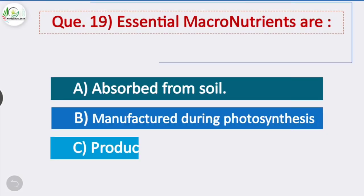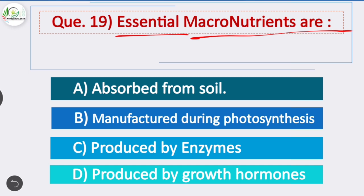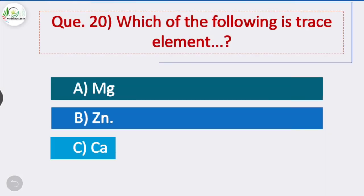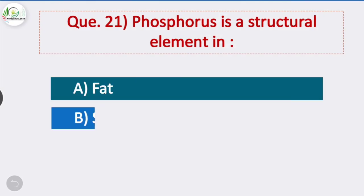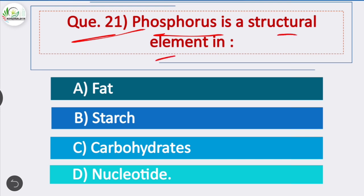Question 19: Essential micronutrients are absorbed from soil — option A is correct. Question 20: Which of the following is a trace element (micronutrient)? Zinc is a trace element — option B is correct. The other three — magnesium, calcium, and phosphorus — are macronutrients. Question 21: Phosphorus is a structural element in — option D is correct — nucleotides are made up of phosphorus; phosphorus is a structural element in nucleotides.